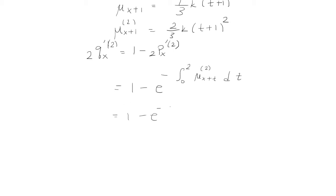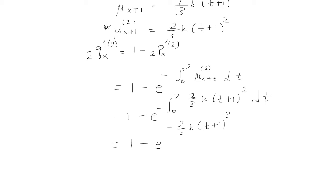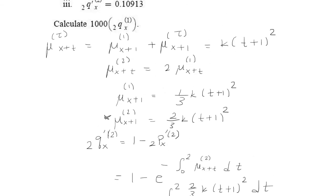We already found the force of mortality for the second decrement, so we substitute that in: (2/3)k(t+1)². Solving this integral, we get a factor of negative two-ninths out front, evaluated from 0 to 2. That gives us 1 minus e to the negative (52/9)k, which equals 0.10913 from the third bullet point.